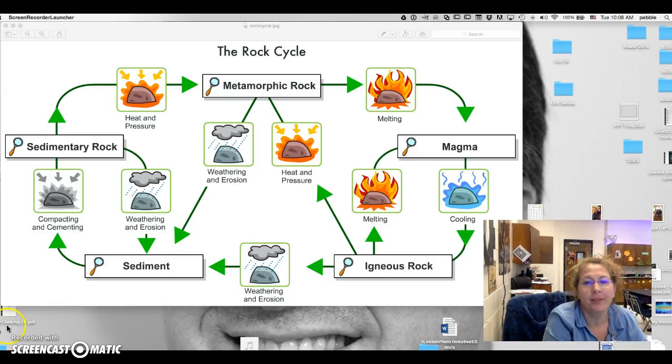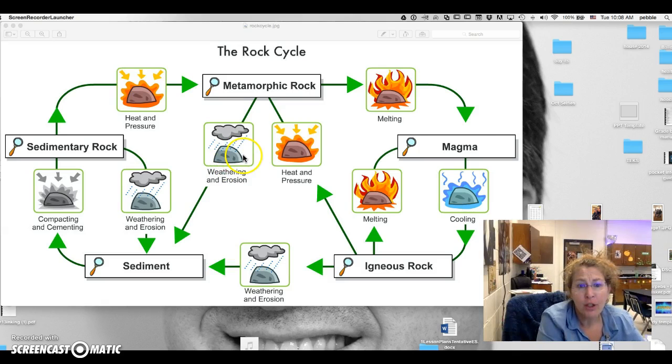Okay peeps, Dr. J here, and we're going to talk about the rock cycle. So we have our three types of rocks: we have metamorphic rock, we have igneous rock, and we have sedimentary rock.